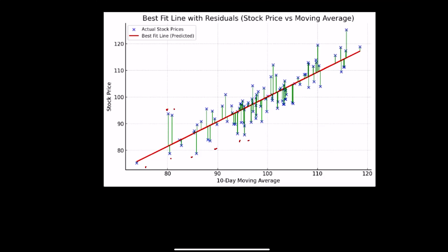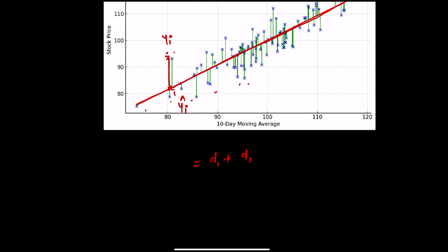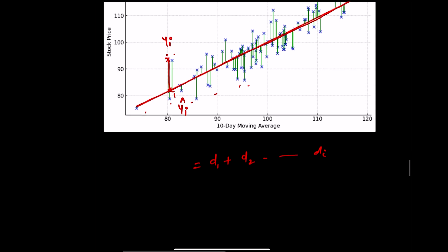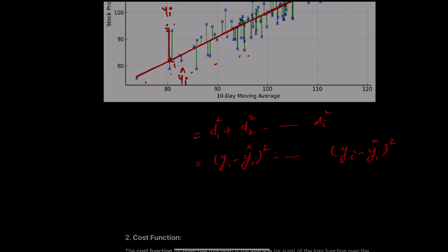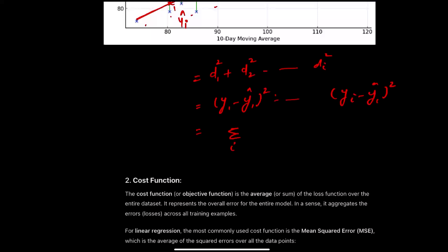In linear regression we draw a best fit line, but it is not ideal, so we need to find the error or residual — the difference between the actual value (yᵢ) and the predicted value (ŷᵢ). To remove the direction of errors, we square the distances: (y₁ − ŷ₁)² up to (yᵢ − ŷᵢ)², which gives us the summation Σ(yᵢ − ŷᵢ)². This is known as the loss function.